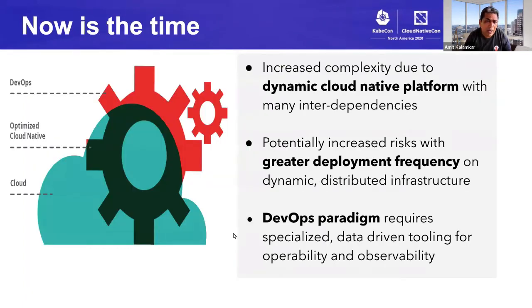And why it became critical right now, as more and more of our services moved to Kubernetes, it increased the complexity due to a dynamic cloud native platform. As well as we are deploying much more that increased the risk. At the same time, Intuit did a DevOps transformation which required specialized data driven tooling.